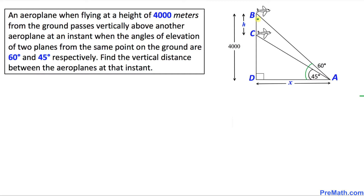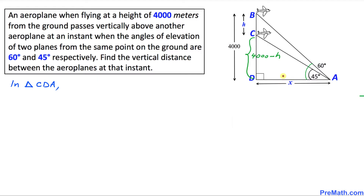The distance between these two planes we label as h meters. So the distance between C and D is simply 4000 minus h. Now let's focus on the smaller right triangle CDA. In triangle CDA, this side is our adjacent side and this side is our opposite side.